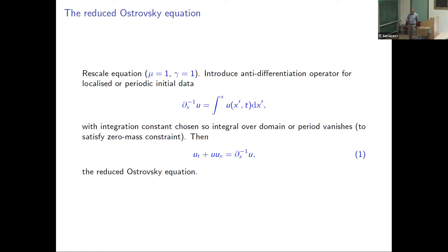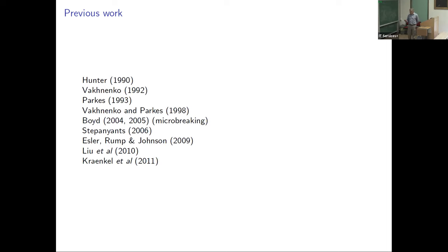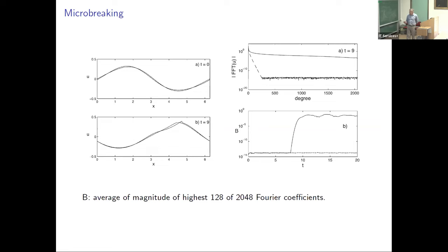It's been looked at by a lot of people before; one of the earliest works was by Hunter. The one I'll concentrate on initially is by Boyd, who introduced the concept he called micro-breaking. Micro-breaking is when you take two sets of initial conditions—one just below the breaking criterion and one just above it—at t equals zero. By t equals nine, the one just below is still arbitrarily smooth, but the one just above has developed a very small step: the step is vertical but of arbitrarily small height. That's what Boyd called micro-breaking.